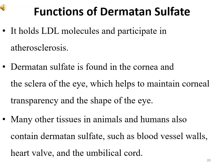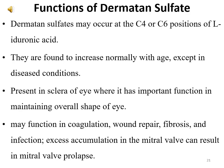Functions of dermatan sulfate: it holds LDL molecules and participates in atherosclerosis. Dermatan sulfate is found in the cornea and sclera of the eye, helping to maintain corneal transparency and shape. Many other tissues also contain dermatan sulfate, such as blood vessel walls, heart valves, and umbilical cord. Dermatan sulfates may occur at carbon number 4 or carbon number 6 positions of L-iduronic acid and are found to increase normally with age except in disease conditions.